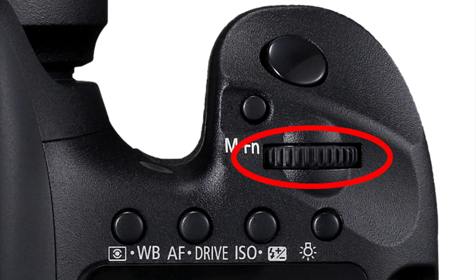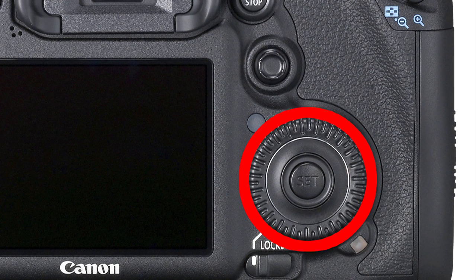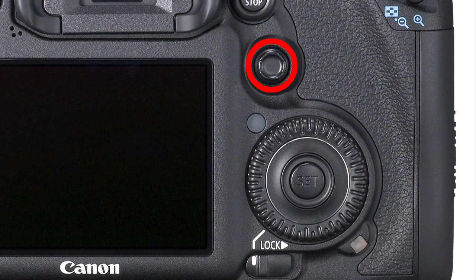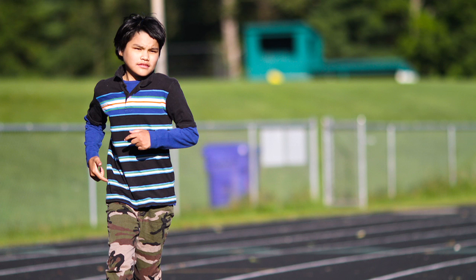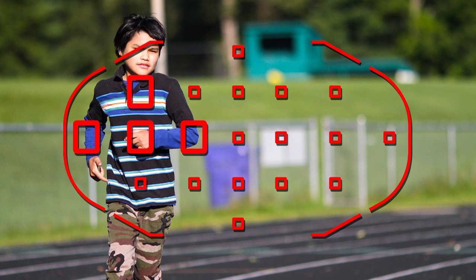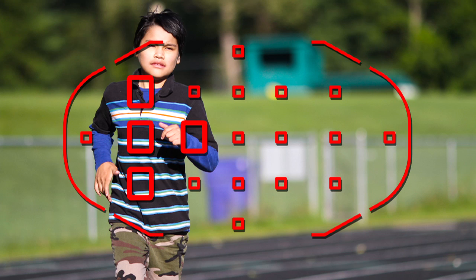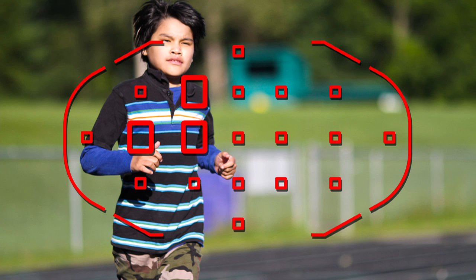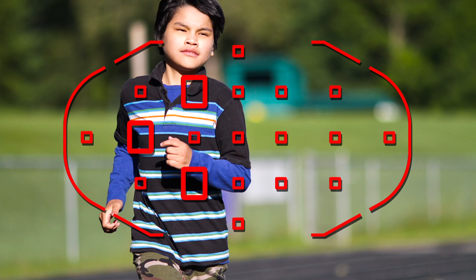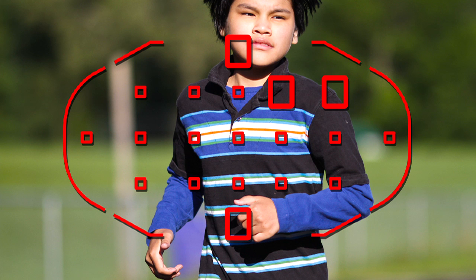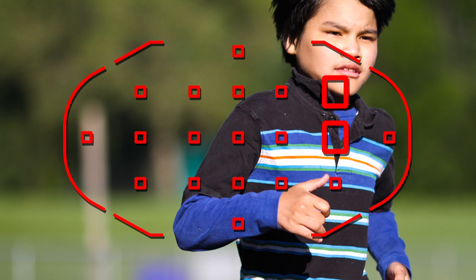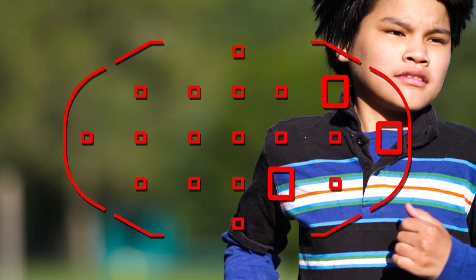Turn either the top or rear dials, or use the Multi-Controller to highlight the one point to start from. Start focusing as soon as your subject begins moving. If the subject moves away from the starting point, the remaining AF points are active and will continue to track it, and the new points will appear in the viewfinder.